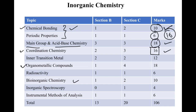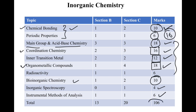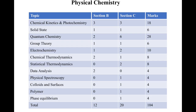Inner transition metals saw increased marks at 12. Organometallic marks decreased to 18. Radioactivity gave 6 marks, bio-inorganic chemistry 10 marks, inorganic spectroscopy (ESR spectroscopy question) gave 4 marks, and instrumental methods of analysis gave 6 marks. Total: 106 marks for inorganic chemistry in this paper.